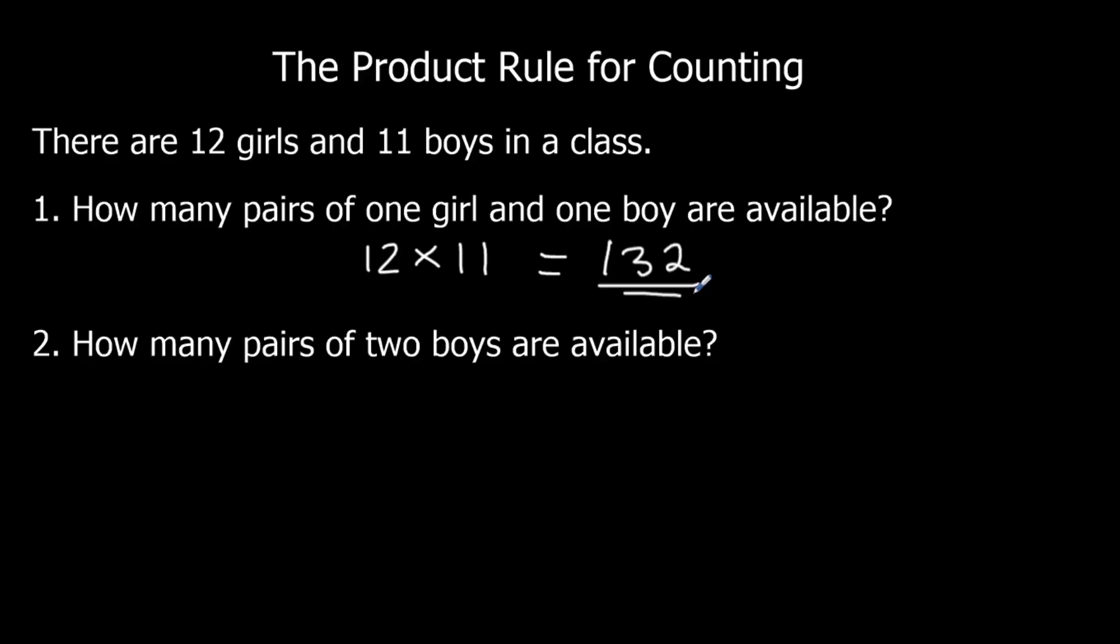How many pairs of two boys are available? So there's eleven boys in total. So I've got eleven options for the first boy, then ten options for each of those. So I can pick ten potential partners for each boy. So eleven times ten, but we're going to get a double of each of them, so I need to half it. So it's eleven times ten, divided by two, which is fifty-five.